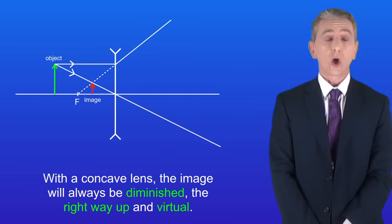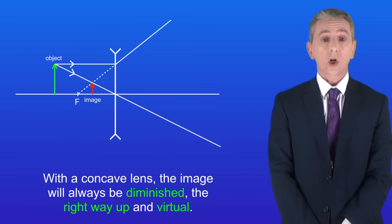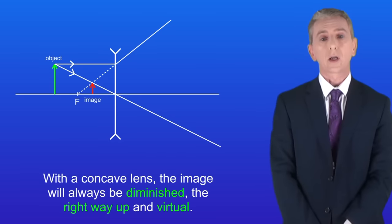So with a concave lens, the image will always be diminished, the right way up, and virtual. Remember you'll find plenty of questions on concave lenses in my vision workbook, and you can get that by clicking on the link above.